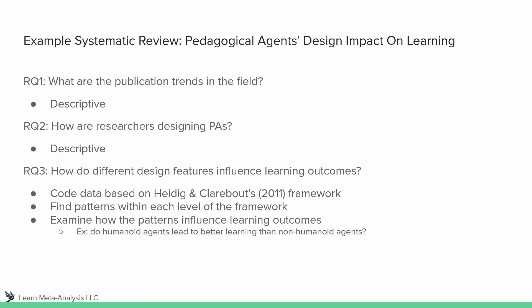As another practical example, one of the questions you might ask is: do humanoid agents — those that look kind of human-like — lead to better learning outcomes than non-humanoid agents? That might be one of those patterns you want to investigate if you find sufficient studies examining that type of thing.